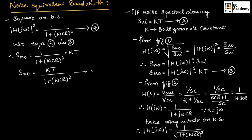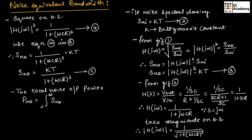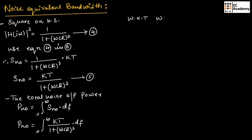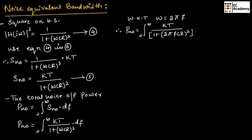Now, the total noise output power PN0 is equal to the integration of SN0 from 0 to infinity with respect to dF. Substituting the value of SN0, PN0 is equal to the integral from 0 to infinity of KT divided by 1 plus omega CR squared dF. Since omega is equal to 2 pi F, PN0 is equal to the integral from 0 to infinity of KT divided by 1 plus 2 pi FCR squared dF. Let us call this equation number 6.